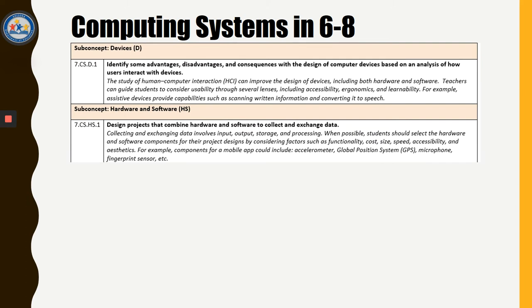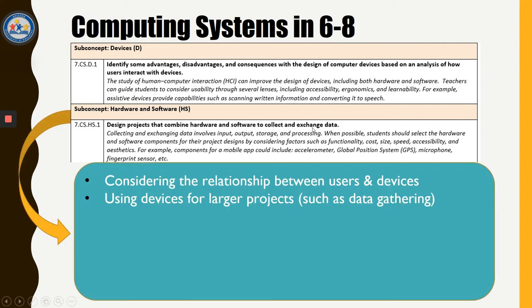Beyond upper elementary and moving into middle school, we have two standards from seventh grade that show how students are examining these devices as parts of a larger social ecosystem. You see words such as advantages, disadvantages, and consequences being used. Students are designing projects that use hardware and software to collect and exchange data. A key aspect is that students rely on their lived experiences with technology — both positive and negative — to identify the consequences of their devices in their society and community. This can also motivate the need for them to come up with new devices to solve problems, which may incorporate some prototype and design process that overlaps with science, math, or engineering disciplines.